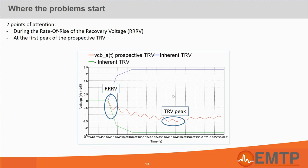When comparing the prospective and the inherent TRVs, there are two particular points of attention. The first one is the TRV just following the current interruption. At this moment, the rate of rise of the recovery voltage is a concern. The second one is when the TRV reaches its peak value. Most of the time, the circuit breaker will then be completely open and we have to verify that the peak TRV is lower than the maximum withstand voltage of the circuit breaker.